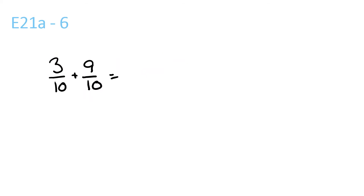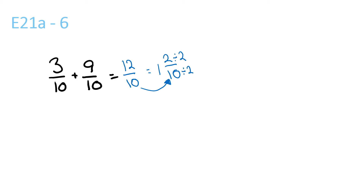3 plus 9 is 12. Bring the 10 over, over 10. That is the same as 10 goes into 12 once with a remainder of 2 over 10, because the 10 stays the same. Now, 2 divided by 2 and 10 divided by 2 — that is equal to 1, 2 divided by 2 is 1, over 10 divided by 2, which is 5. So 1 and 1 fifth.